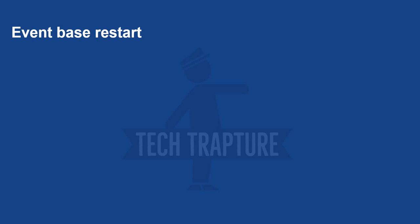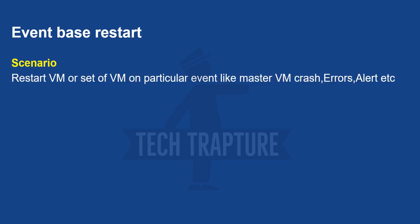For event-based restart, the scenario is restarting a VM when a particular event occurs — for example, when a master VM crashes and 10 client VMs are still running. You may also want to restart a VM when a specific error appears in logs or when an alert arrives in your email. This event-based restart can be implemented using Google Cloud.